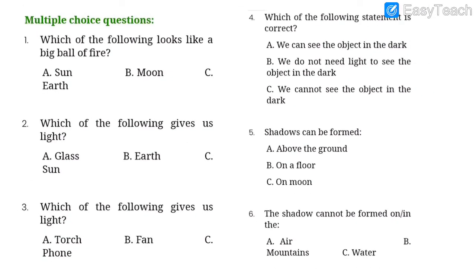Now let us solve multiple choice questions based on what we have studied. Write these down. Number one: which of the following looks like a big ball of fire — sun, moon, or earth? The answer is the sun. Number two: which of the following gives us light — glass, earth, or sun? The answer is again the sun, option C.